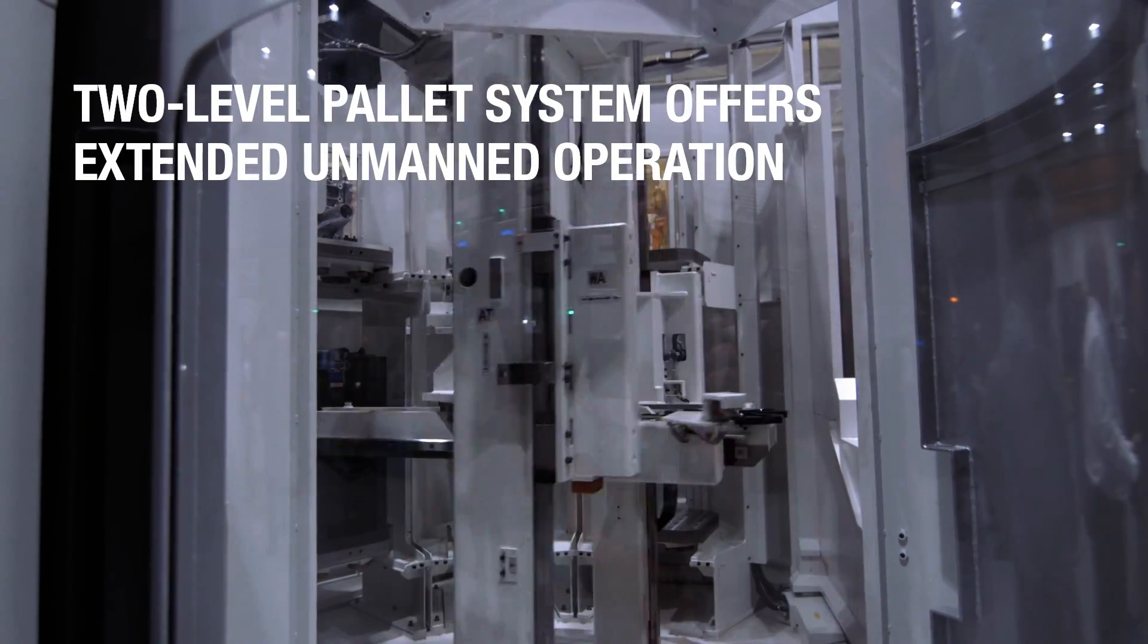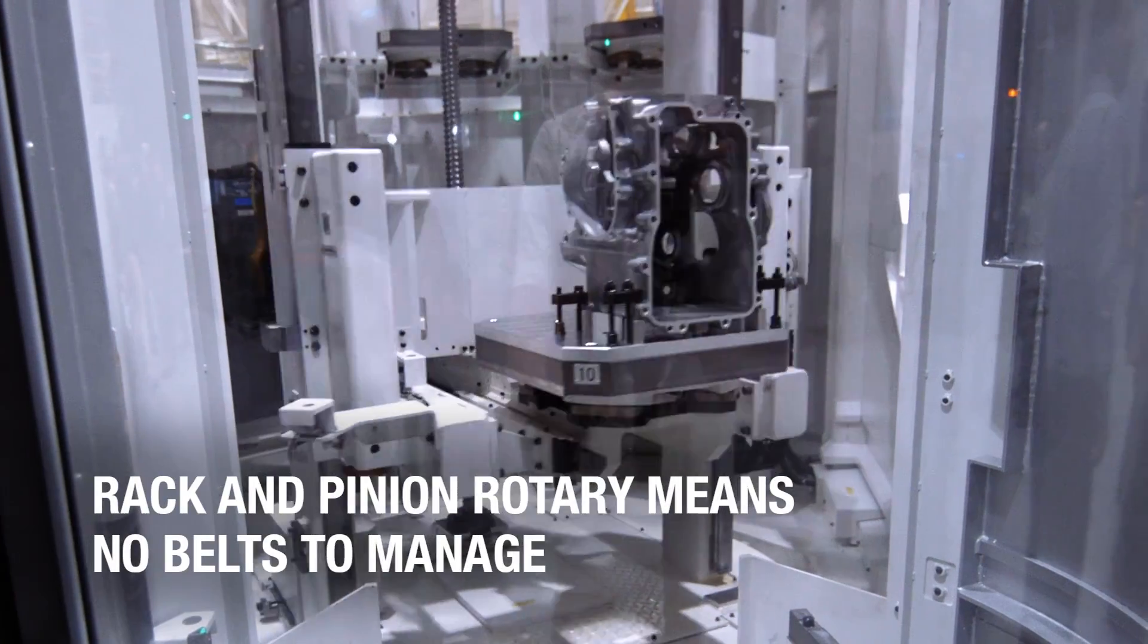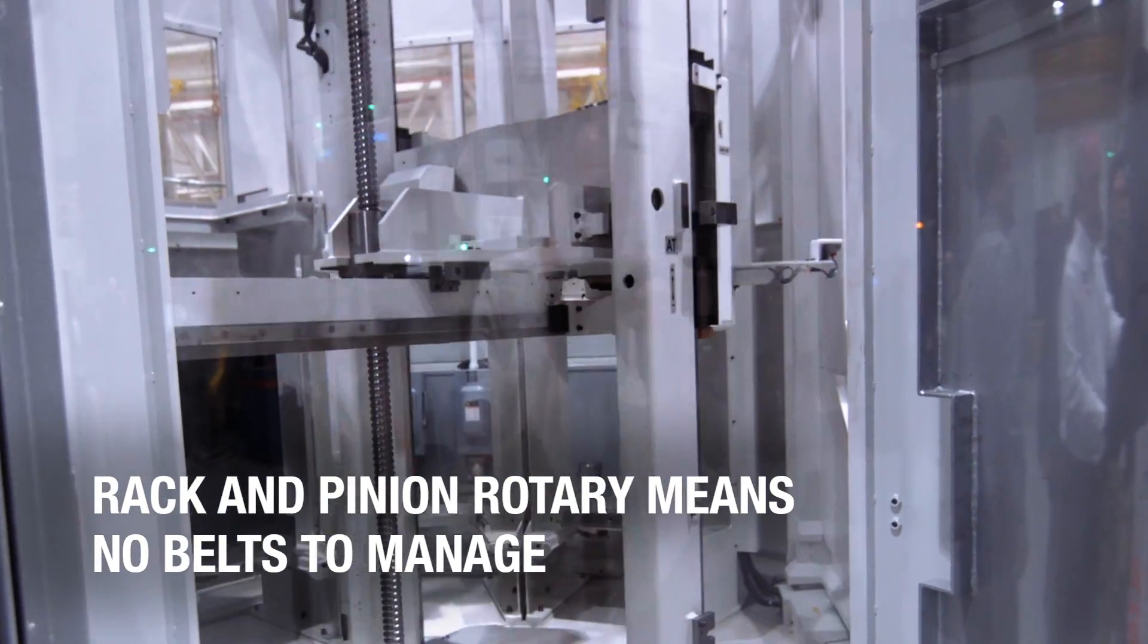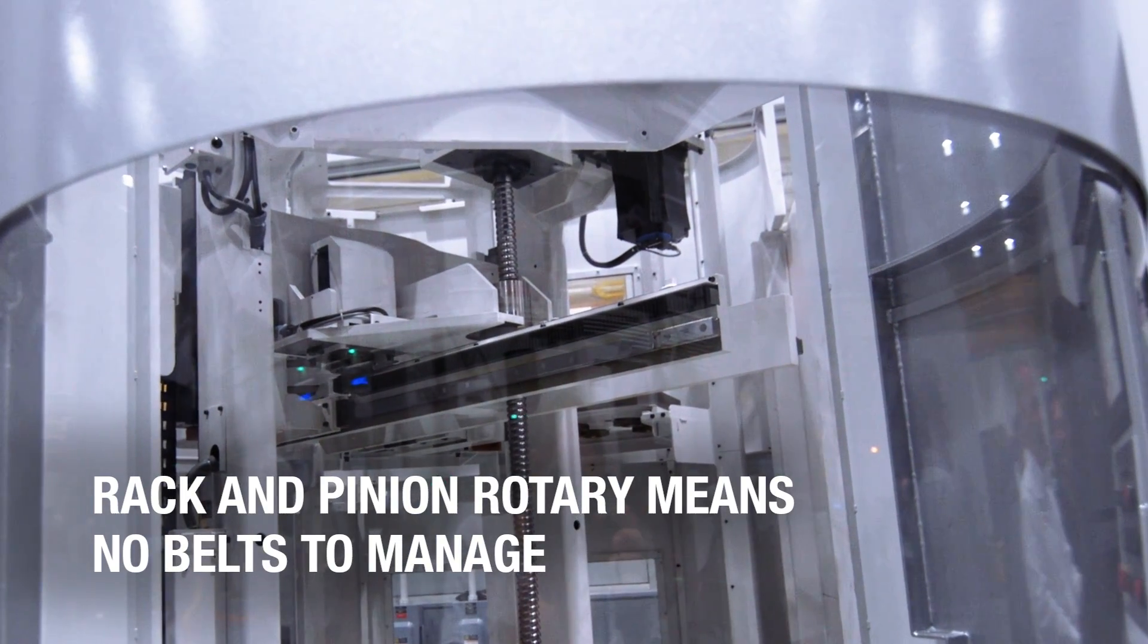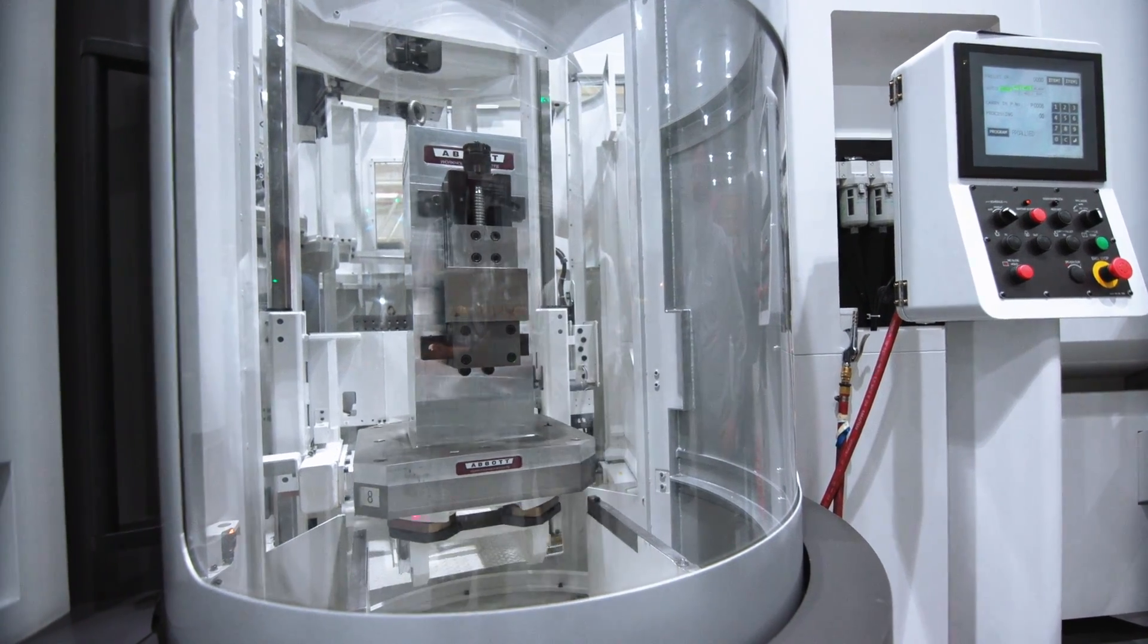The right automation solution can also increase productivity aside from the machining. Okuma's automatic pallet changer provides opportunity for fixture setup and restocking of the fixture while the machine is cutting pieces from the other pallet. Could this be a perfect fit for your shop floor?